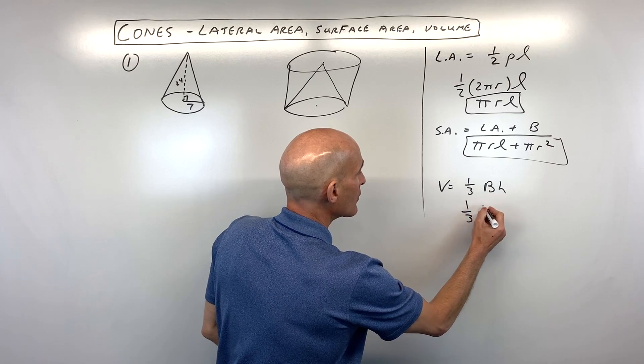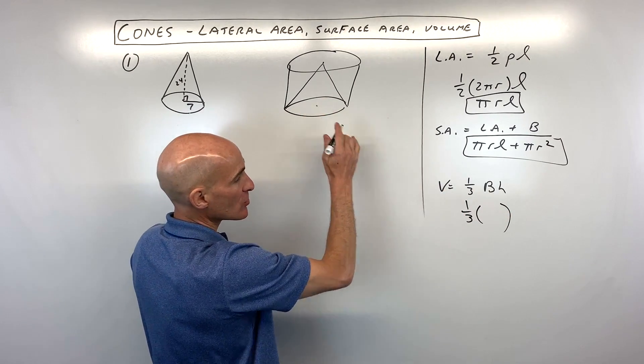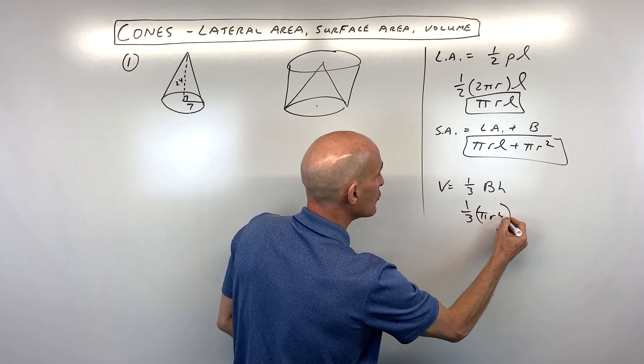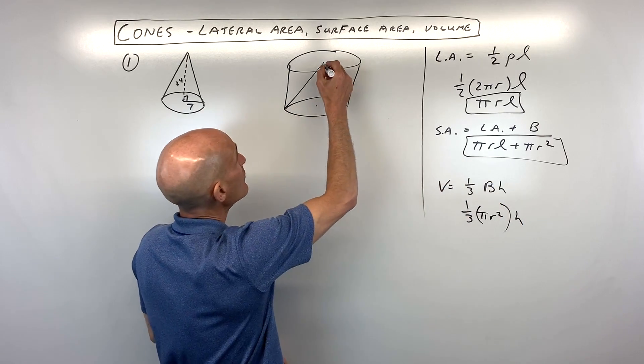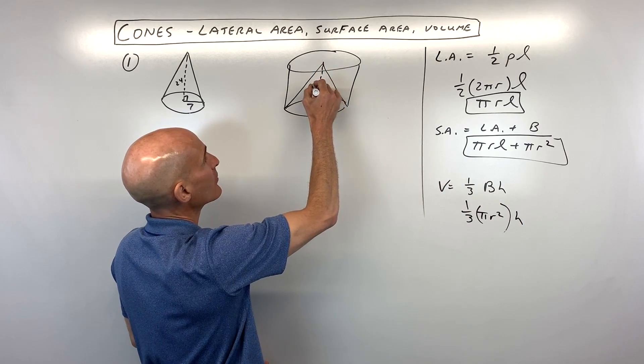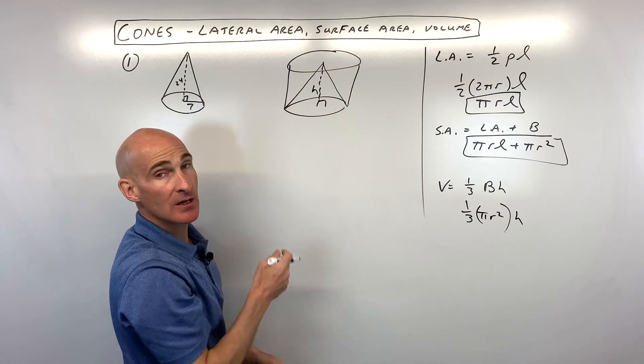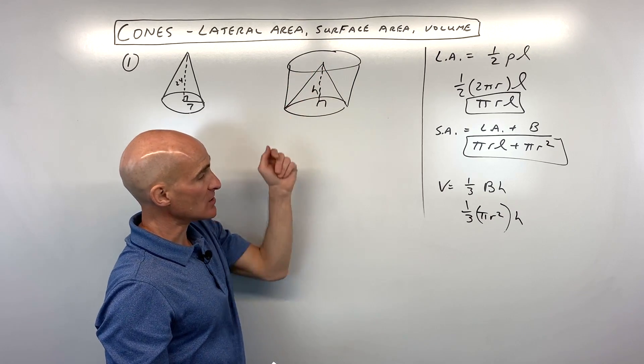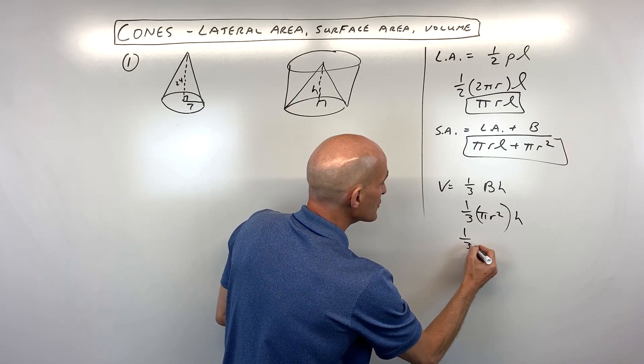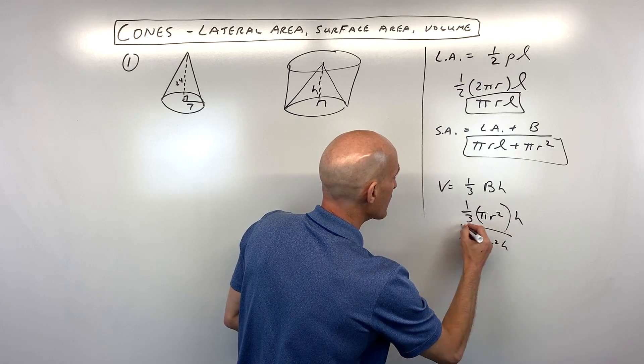So the area of the base, of course, is a circle, so that's going to be area of a circle, πr². And then the height we want is actually that perpendicular height right here, not the slant height, but the shortest distance between the two bases here. So that simplifies down to just one-third πr²h.